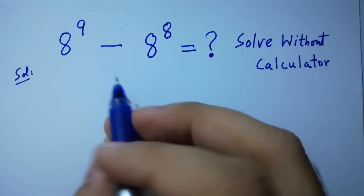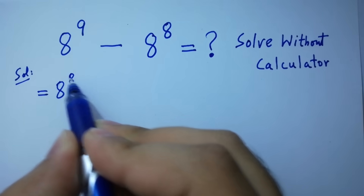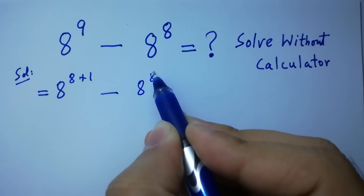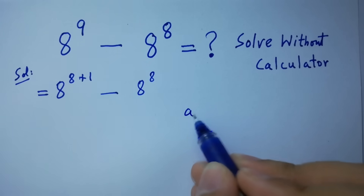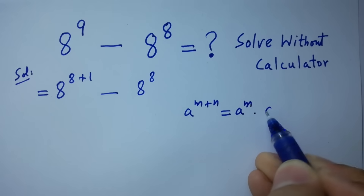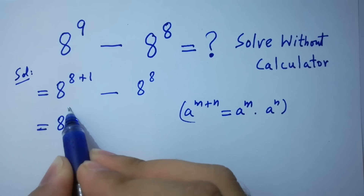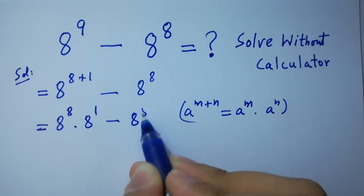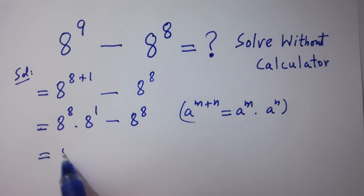This is the same as 8 to the power 8 plus 1 minus 8 to the power 8, since 8 plus 1 is equal to 9. As we know, a to the power m plus n equals a to the power m times a to the power n. Then it will be 8 to the power 8 times 8 to the power 1 minus 8 to the power 8. Here, 8 to the power 8 can be common.